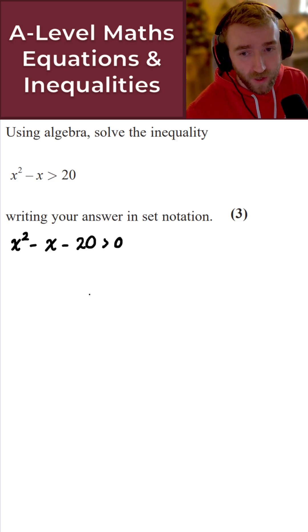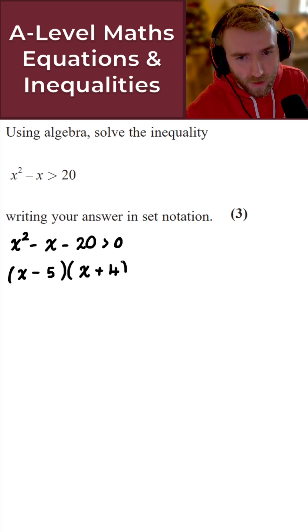What we'd hope here is that this would factorize and the good news here is that this does indeed factorize. So what do we get here then? We get x minus 5 and is it x plus 4? Just quickly double check that. That's greater than zero. x squared or 4x minus 5x, yes, minus x, minus 5 times 4 is minus 20. Perfect.